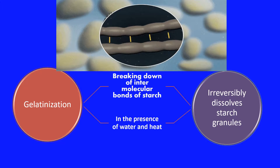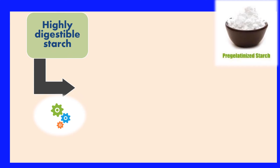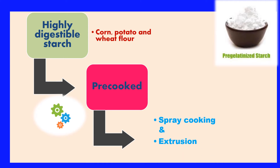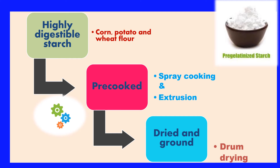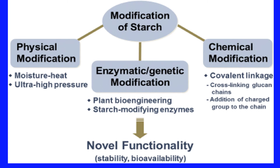Pre-gelatinized starch can be obtained from native raw materials or directly from modified starch and partially gelatinized starch molecules. In all these cases the starch is highly digestible because it is derived from common raw materials such as corn, potato, and wheat flour, and it is pre-cooked by spray cooking, followed by extrusion, and finally dried and ground by a drum drying process. The drum drying process involves making native starch into a slurry, mixing, drying, milling, and obtaining the modified starch.